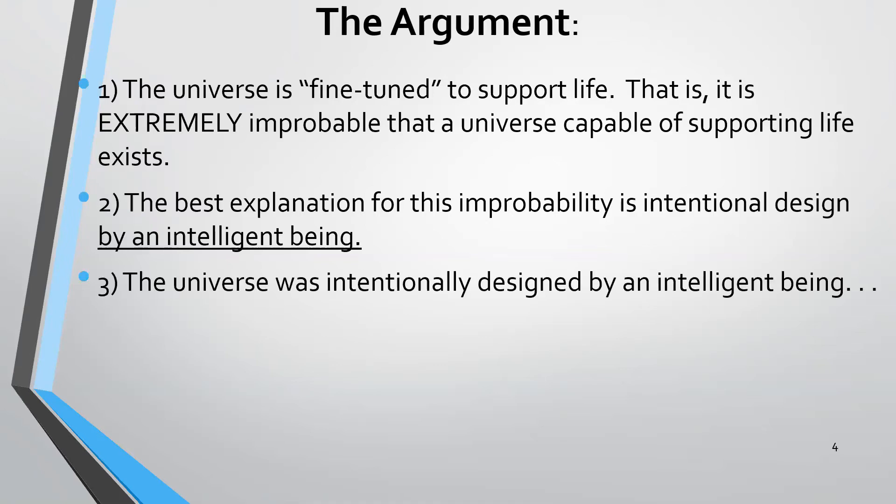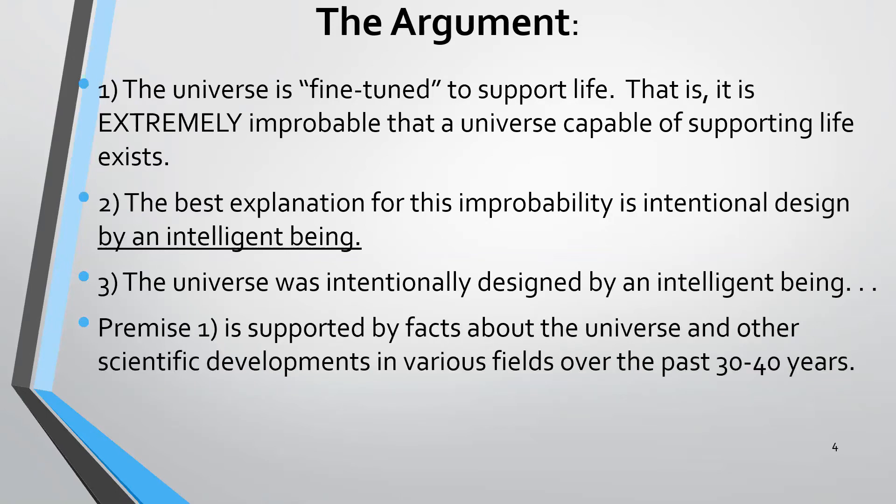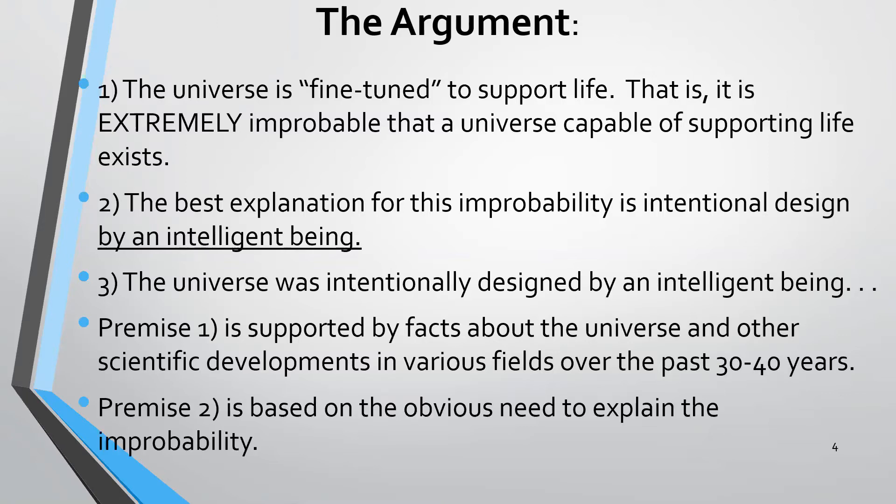The best explanation for this extreme improbability is intentional design by an intelligent being. And we conclude from that that the universe was, in fact, intentionally designed by an intelligent being. What else might we be talking about but the being we know as God? Premise one is supported by facts about the universe and other scientific developments in various fields over the last 30, 40, even 50 or 60 years. The second premise is based on the obvious need to explain this improbability.